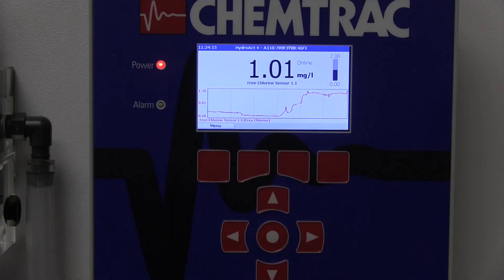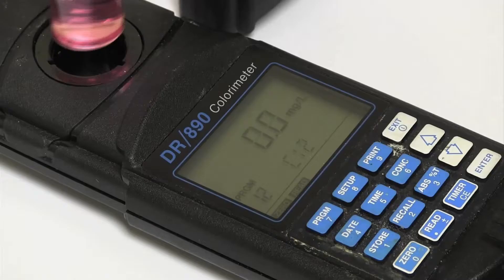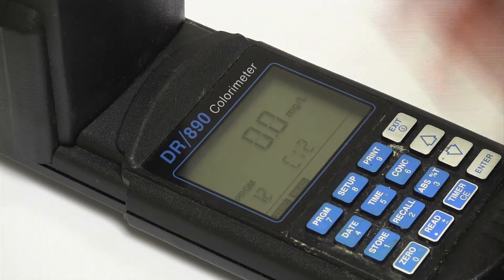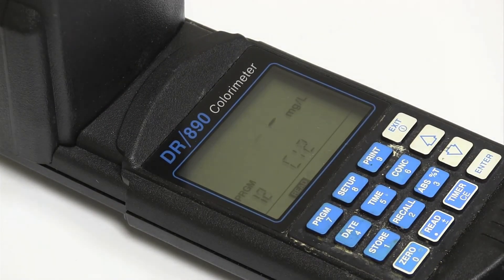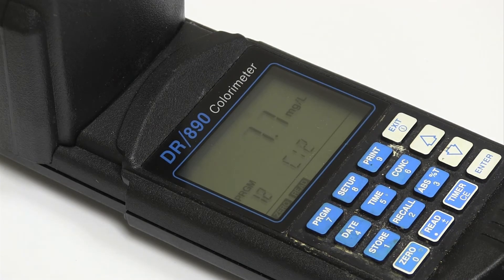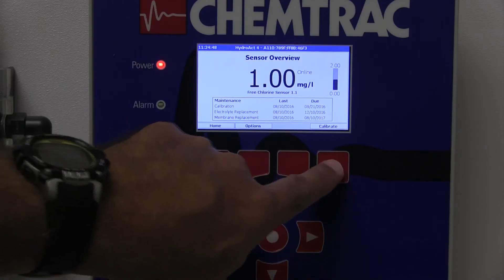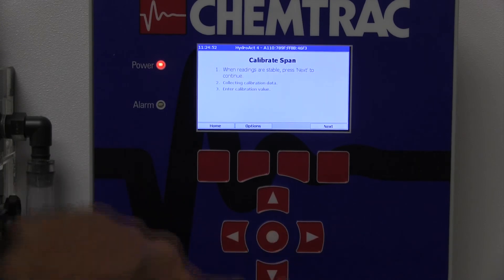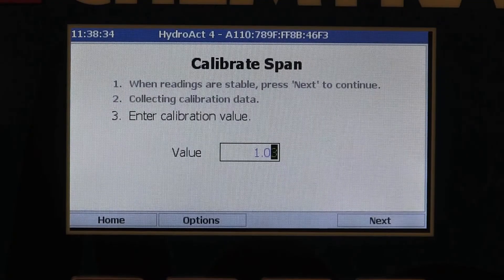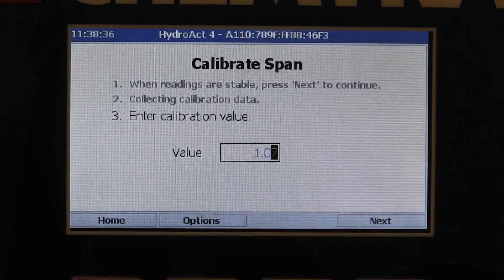When calibrating, the reading from the analyzer is compared to that of another measurement method, such as a DPD chlorine test. At least two DPD tests should be performed in order to ensure repeatability. The calibration mode on the analyzer is easily accessed, and the chlorine reading is adjusted to match the results of the DPD test.